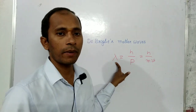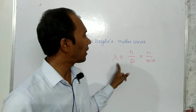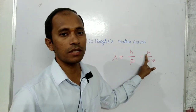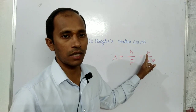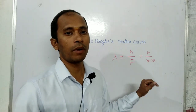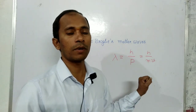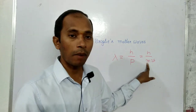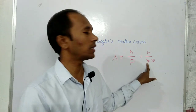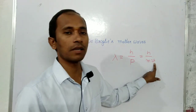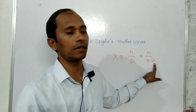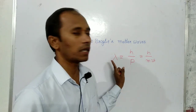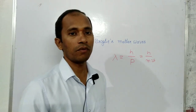So lambda is equal to H by mV. Lambda is the wavelength of the matter wave. H is Planck's constant, which is 6.626 × 10⁻³⁴ joule-seconds. m is the mass of the particle and V is the velocity of the particle — that is the De Broglie matter wave relation.